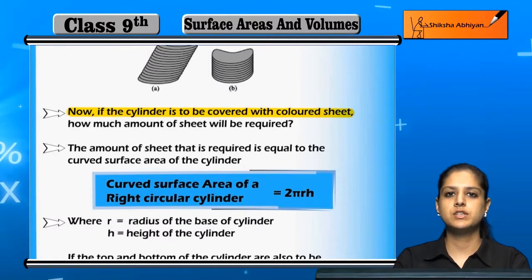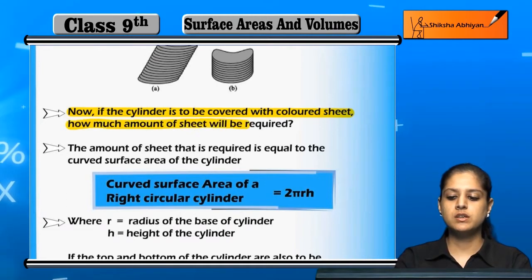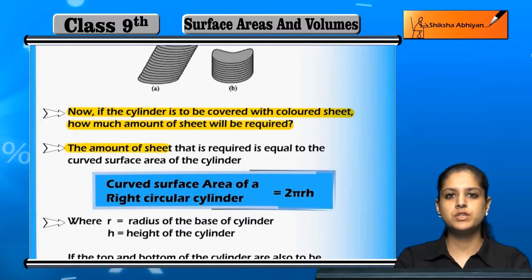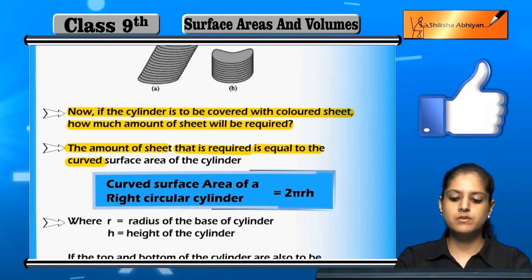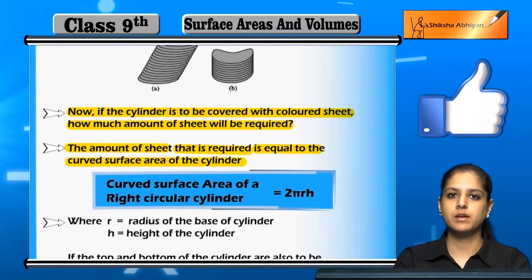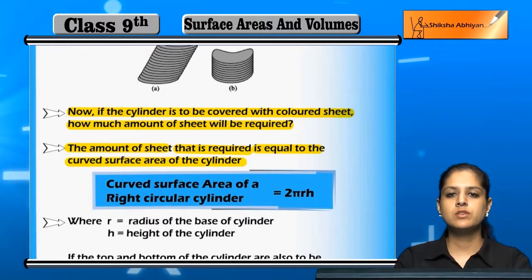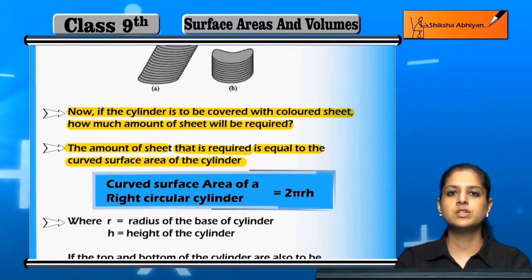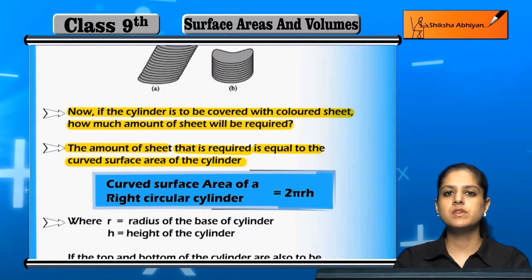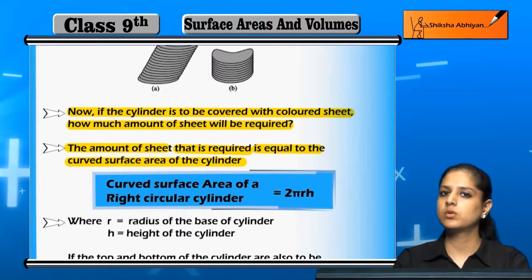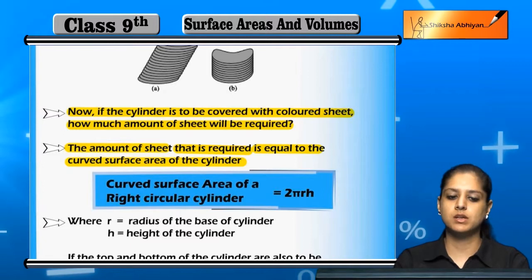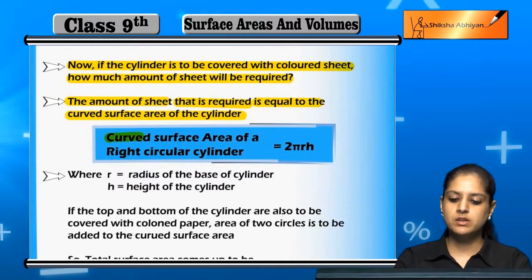The right circular cylinder is to be covered with colored sheets. If we want to cover the cylinder, how much sheet will be required? The amount of sheet needed to cover it is equal to the curved surface area of the cylinder. When we talk about the curved surface area, the top and bottom are not included.